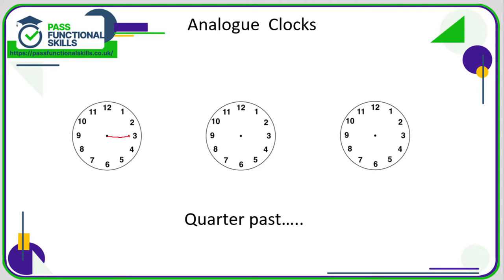When the long hand is on the three and the shorter hand is just a tiny bit past a number, it's quarter past something. So when the long hand is on the three, we know we're talking about quarter past. Here the shorter hand is just beyond the four, so that's quarter past four. I'll draw the long hand on the three and the shorter hand just past the seven — that's quarter past seven. And here the longer hand is on the three and the shorter hand is just past the three, so that is quarter past three.